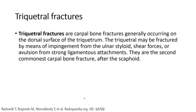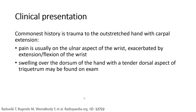They are the second commonest carpal bone fracture. The commonest mechanism is a fall onto the outstretched hand with wrist extension. Tenderness on the dorsal aspect of the wrist is exhibited by extension or flexion of the wrist.